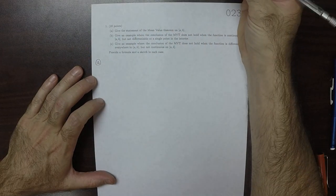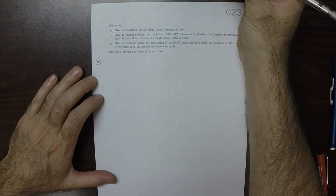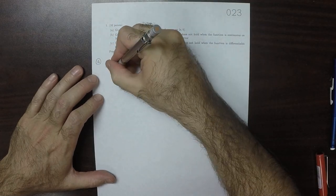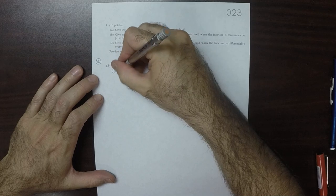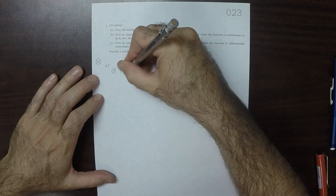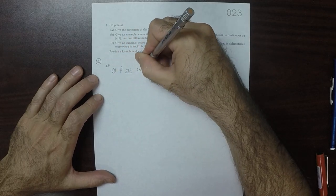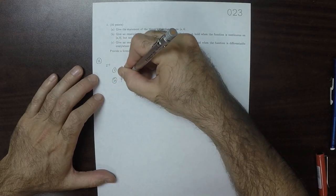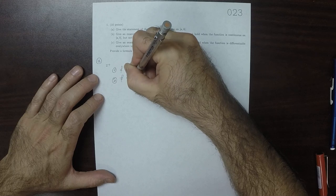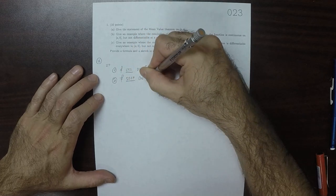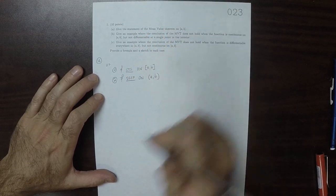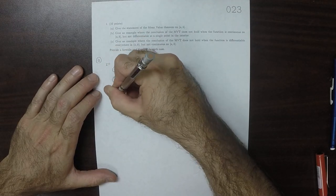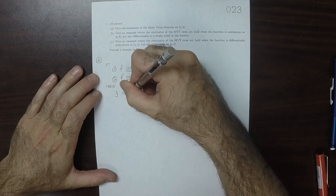So the statement is, if first requirement, f is continuous on closed and bounded interval and second requirement, f is differentiable on the interior of that closed and bounded interval, then there exists a c in the interior